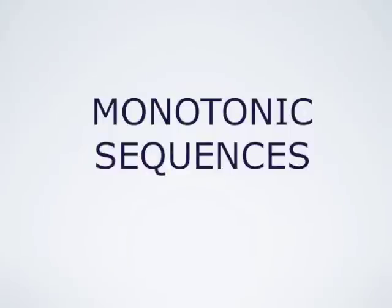Hello everybody, this is Mika Seppelen. Number sequences which are always either increasing or always decreasing are called monotonic. It turns out that monotonic sequences always have limits if these sequences are bounded. This is an important fact, and in this video I will explain why that is the case.